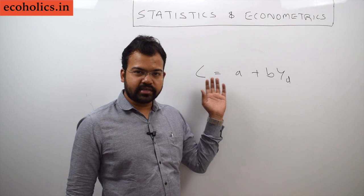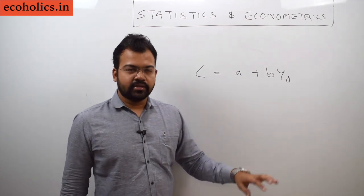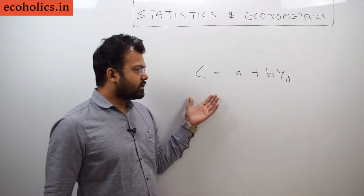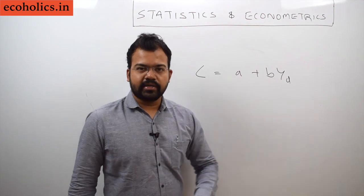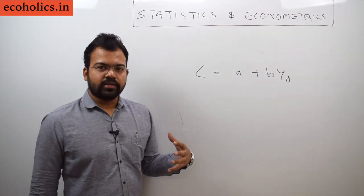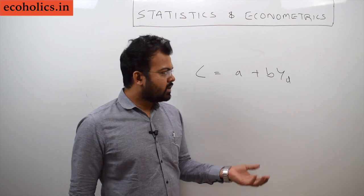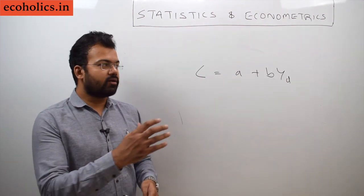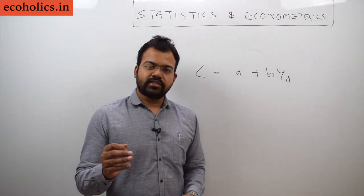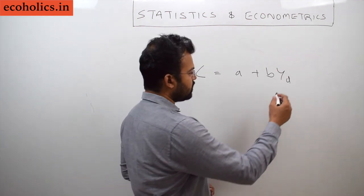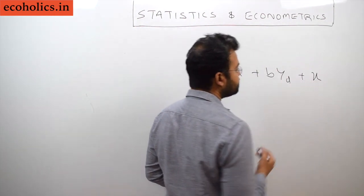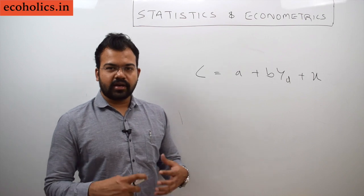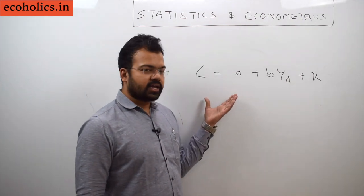If we have one dependent and one independent variable, this is called simple regression analysis. Where we have one dependent variable and more than one independent variable, that is called multiple regression analysis. There are also other factors that affect consumption, which we include by adding mu — known as the disturbance term or stochastic term — because in the real world there are other factors also affecting consumption.